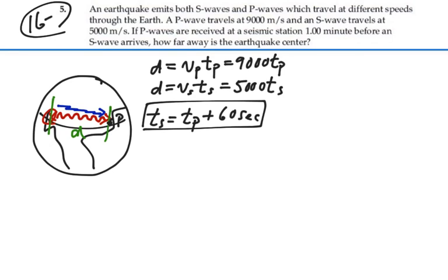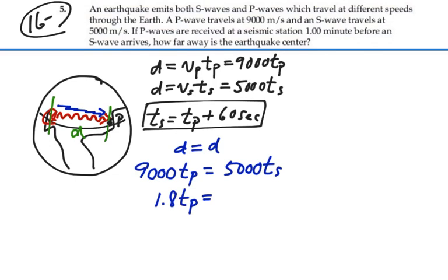We also know that this distance D is equal to the distance D. So 9,000 times the time for a P wave is equal to 5,000 times the time for an S wave. Divide both sides by 5,000, and we'll have that 1.8 times the time for a P wave is equal to the time for an S wave.